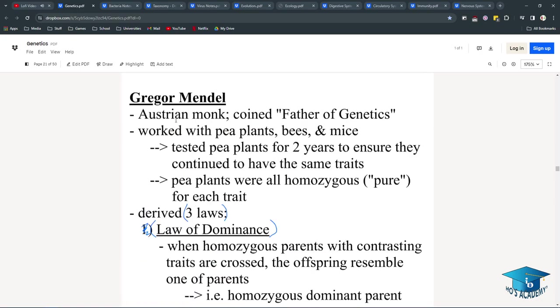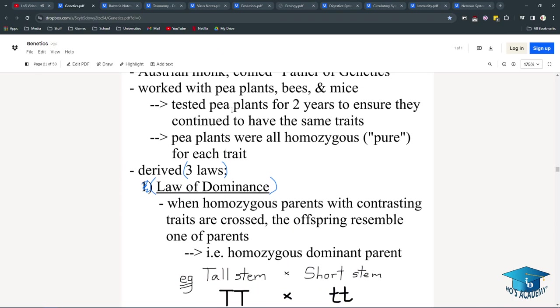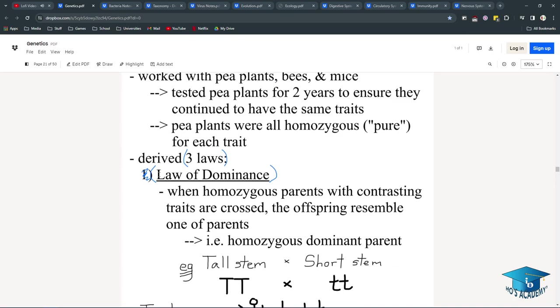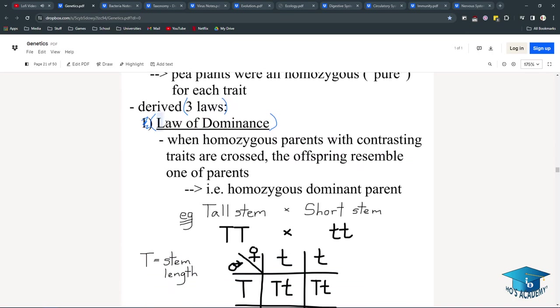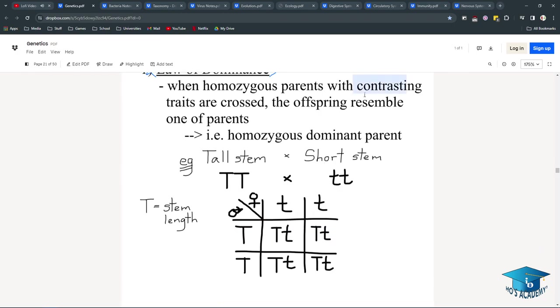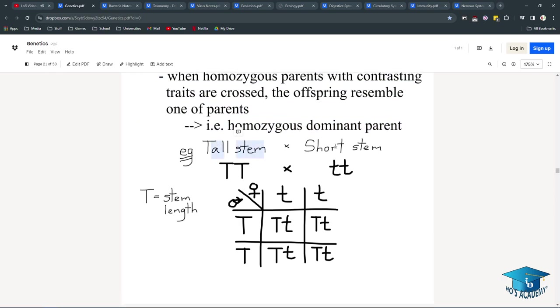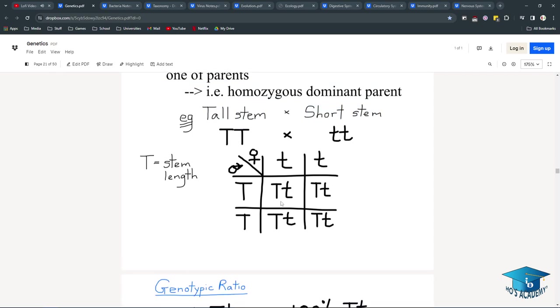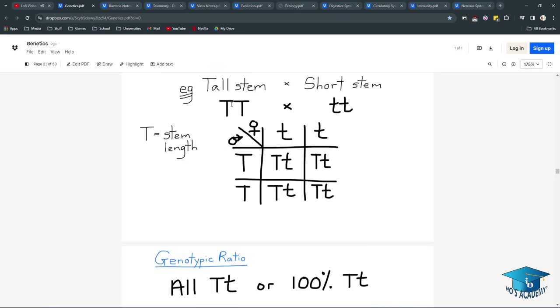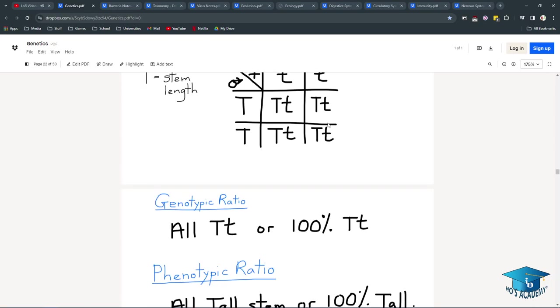So, on to Gregor Mendel, this wonderful dude, who worked with pea plants, bees, and mice to figure out his three laws of dominance, which IB has liked to cut down to two laws, because the law of dominance is not a law to them. But it's still important. So, it's just that when contrasting traits are crossed, the offspring resemble one of the parents, which means that a homozygous and dominant parent, for example, this tall stem plant, crossed with a short stem plant, will definitely produce lots of tall stem plants, because it is impossible, if you check the alleles in this pedigree chart, for any of them to not possess one of the alleles from the tall stem plant. And to possess one of them means that the dominance will show, and they're all affected like this.